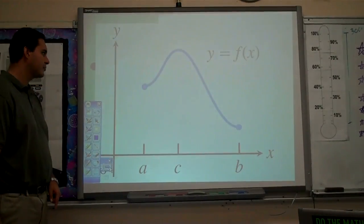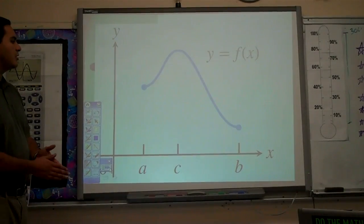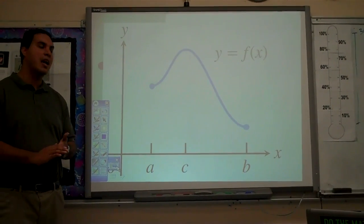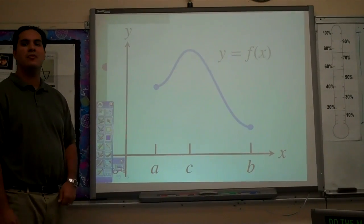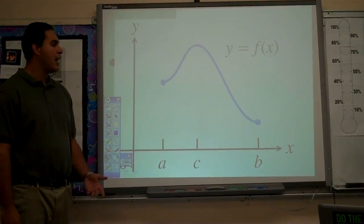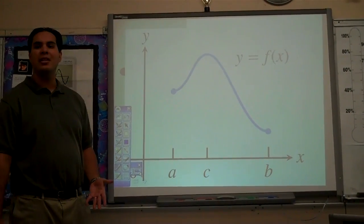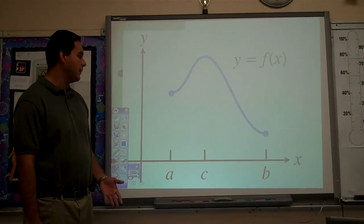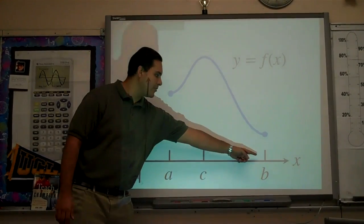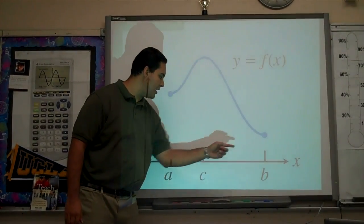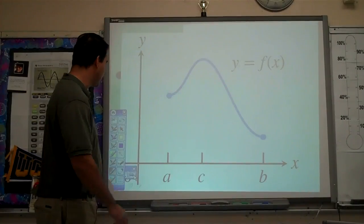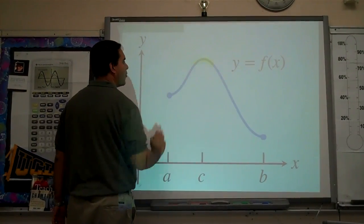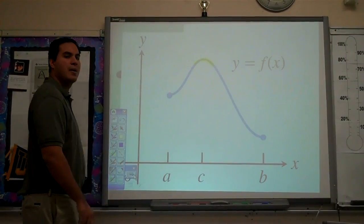Let's try another one. Looking at this function, at what input value do we have the highest output value in this interval? At C. Where do we have the lowest output value? At B. Now in this case, we have our absolute minimum at B and absolute maximum at C. And C also happens to be a relative maximum.